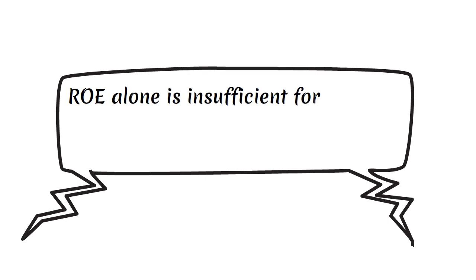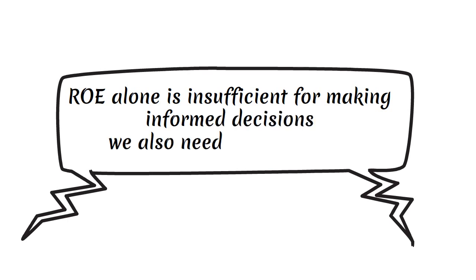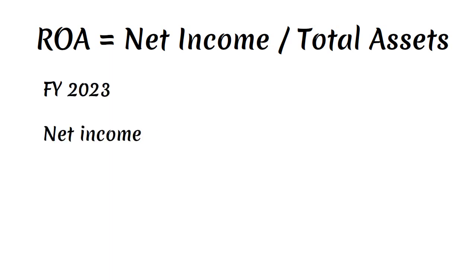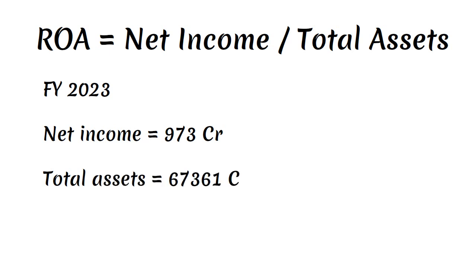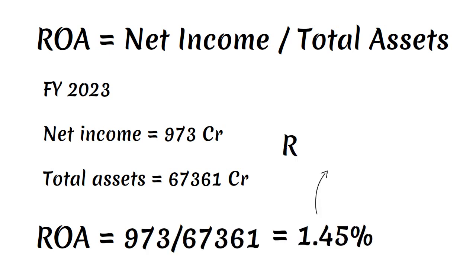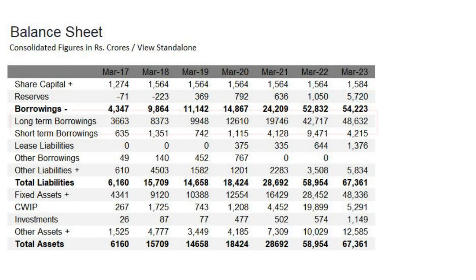However, it is important to note that ROE alone is insufficient for making informed decisions. We also need to assess ROA. To calculate ROA, we need the net income and total assets. For FY 2023, the net income is 973 Crores while the total assets amount to 67,361 Crores. Computing the ROA for FY 2023 yields a value of 1.45%. Generally, an ROA of 5% and above is considered good.